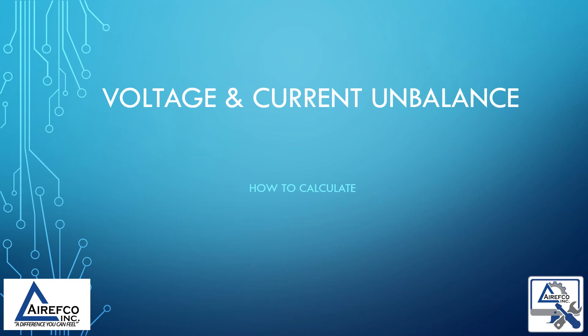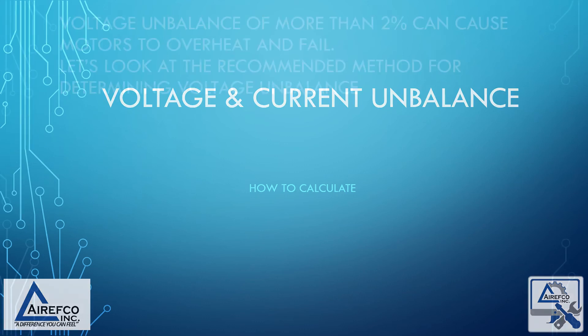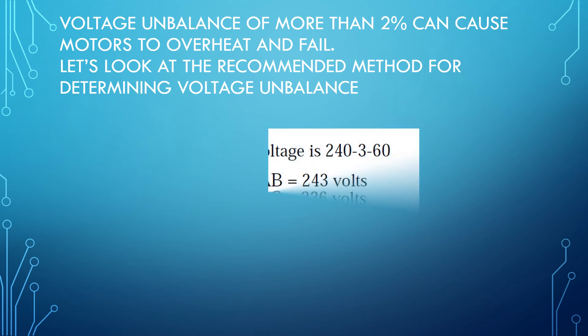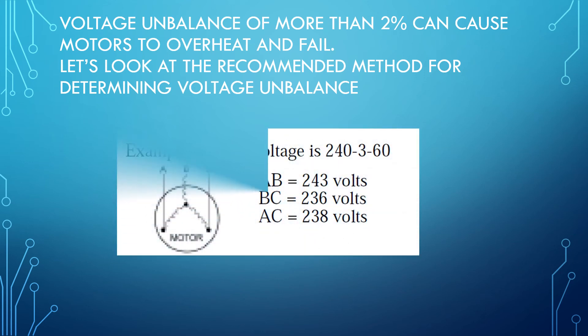Voltage and current unbalance — how to calculate it. Voltage unbalance of more than 2% can cause motors to overheat and fail. Let's look at the recommended method for determining voltage unbalance.